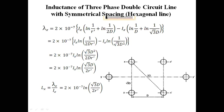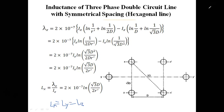This is the inductance for conductor x. Under balanced symmetrical conditions, Lx = Ly = Lz, since the line is symmetrical. This is the inductance formula for the hexagonal type double circuit line. In the next lecture, we will discuss the flat vertical type transmission line. Thank you.